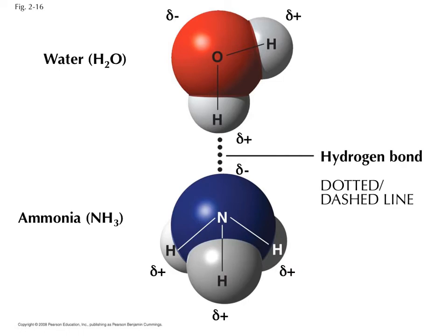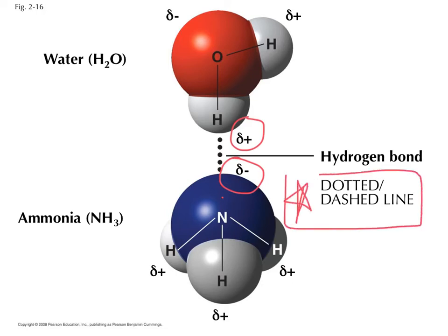Hydrogen bonds don't only happen in water. Here's an example of a hydrogen bond between ammonia and water. Both are polar molecules—the nitrogen is partially negative and the hydrogen is partially positive. The hydrogen bond is represented by a dotted or dashed line between them, whereas solid lines are your covalent bonds.